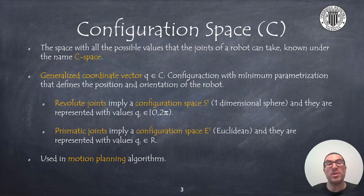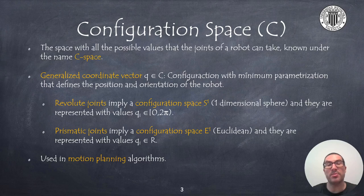The configuration space of a robot is the space with all possible configurations, that is, the values that joints can take. This space is also known as C-space, and here we will refer to it with the letter C. The configuration of a robot represents the minimum parametrization that allows us to uniquely define the position and orientation of the robot. Therefore, we will refer to Q as the generalized coordinate vector that belongs to C.